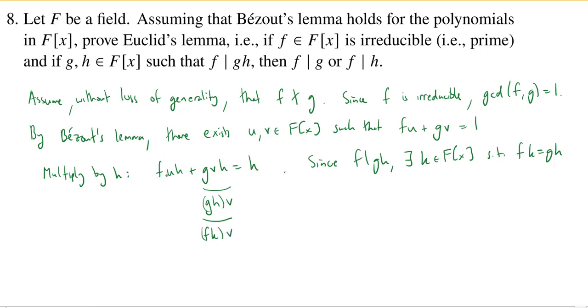But now I have an f in each summand, and so we conclude that f times (uh plus kv) is equal to h. And uh, u, h, k, and v, they're all polynomials in F[x]. Since it's a ring, we know that their product is also going to be a polynomial with coefficients in F.